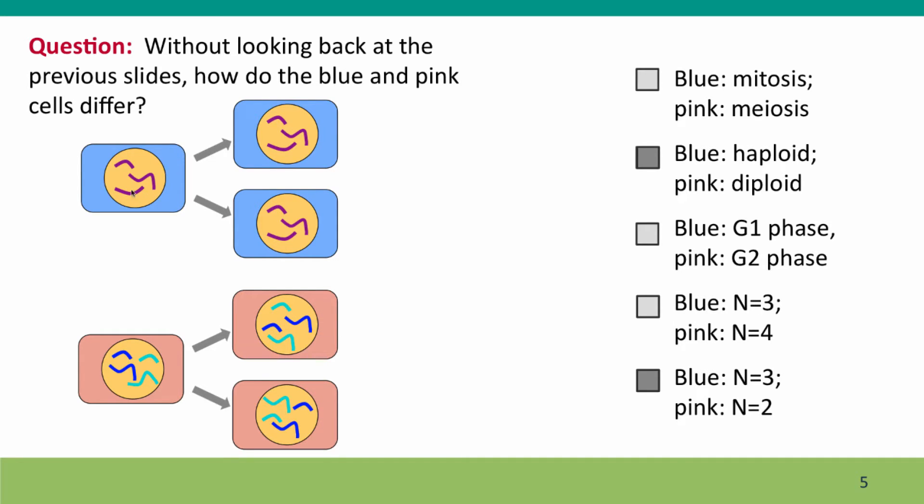And you can tell that because the blue cells, all the chromosomes look different. Different lengths, different shapes. In the pink cells, there's two identically sized and shaped chromosomes here and two more here. So these cells are diploid. These cells are haploid.